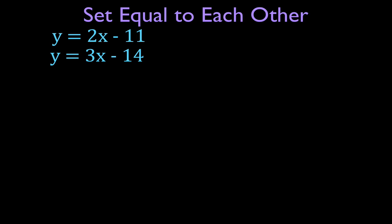We want to solve these two linear equations. This is the equation for a line: y equals 2x minus 11. This is the equation for a line: y equals 3x minus 14. We want to find what single pair of x and y values is a solution to both equations — which is also the point where these two lines intersect. We're going to do that by setting them equal to each other.